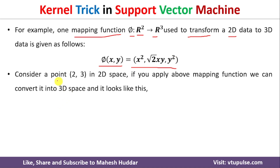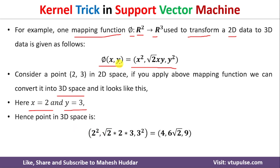Let us say that (2, 3) is a data point in 2D space. If we apply this mapping function, we get a point in 3D space. So with x = 2 and y = 3, phi(2, 3) = (2², √2 · 2 · 3, 3²) = (4, 6√2, 9). So the data point (2, 3) in 2D space is converted into 3D space. Once you do this, nonlinear data is converted into linear data with the help of the mapping function.